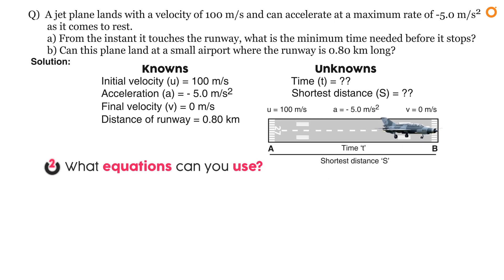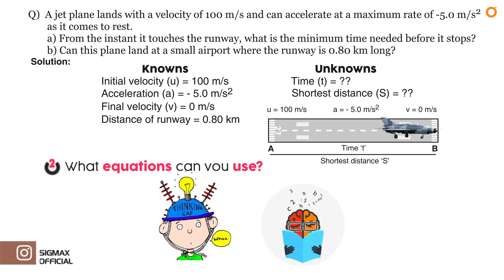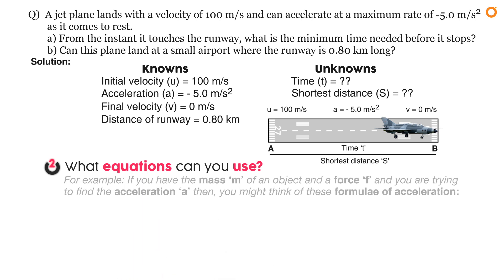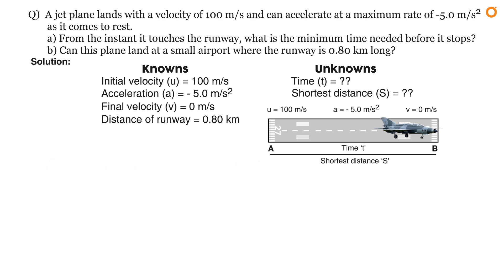Now let's move to step number two: finding the equations applicable to solving this problem and finding the answer. Think of equations that include the quantities you know and the one you are looking for, then pick the right ones and apply them. For example, if you have mass and force and want to find acceleration, you might consider a = (v − u)/t and F = ma. From these, F = ma is the right one.